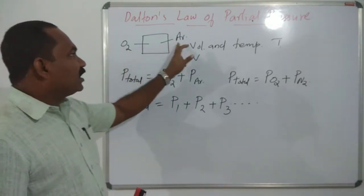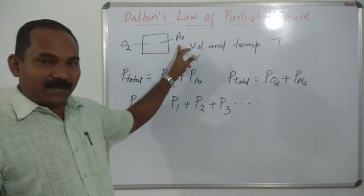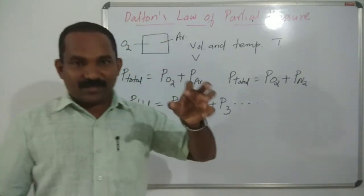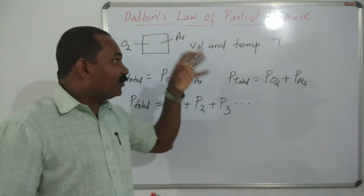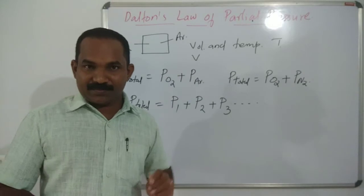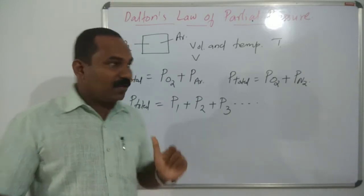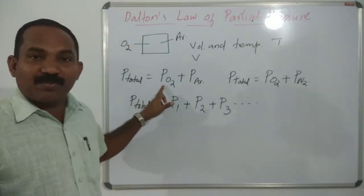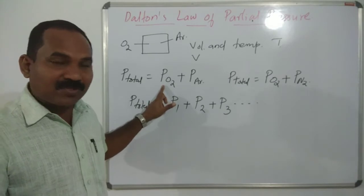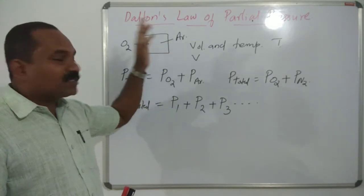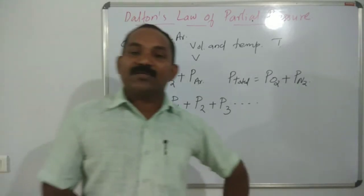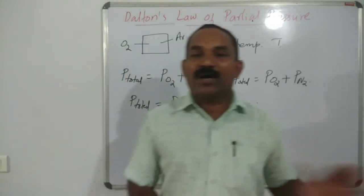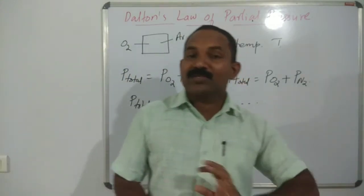When oxygen and argon are filled in a cylinder at constant volume and constant temperature, the pressure exerted by the oxygen is called the partial pressure of oxygen, and the pressure exerted by the argon is called the partial pressure of argon. A very simple concept.